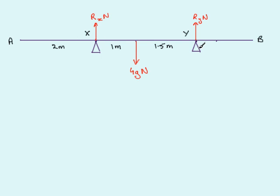What makes this problem special is that we now hang a particle of mass M kilograms at point C, where AC is five meters. At the moment we've got four and a half meters to Y, so C will be a further half meter beyond support Y.